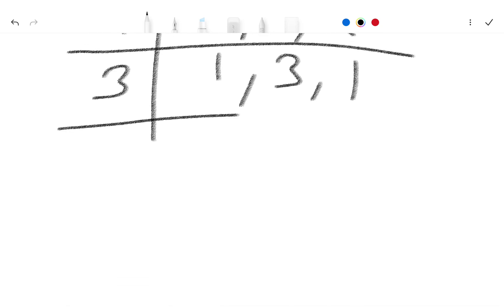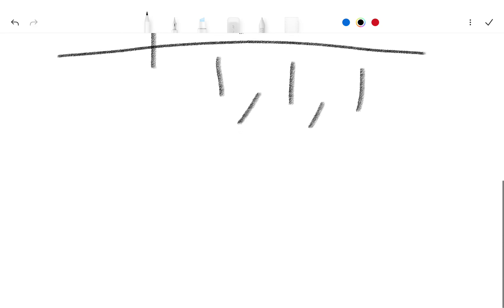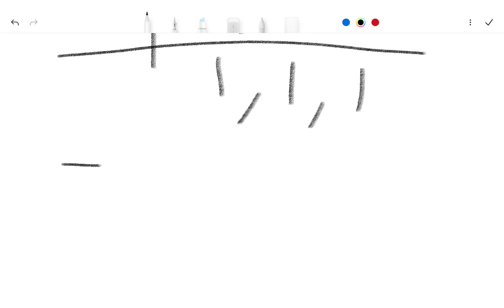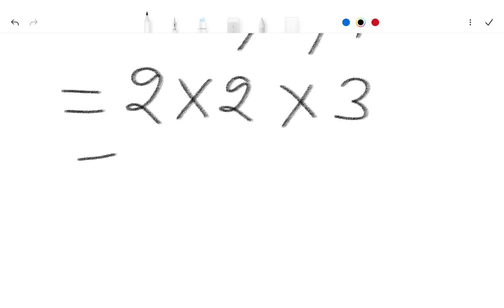Now we divide by 3: 1 stays, 3 ones are 3, and 1. Now we have the factors, so we write 2 multiply 2 multiply 3. So here is our LCM — 2 twos are 4, 4 threes are 12.